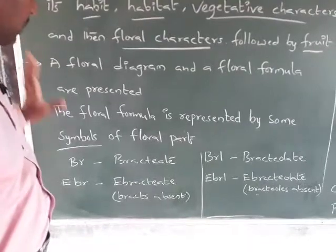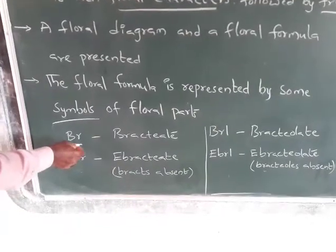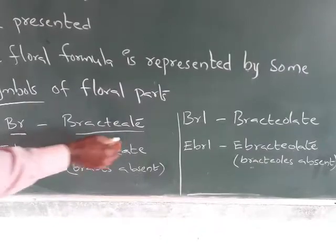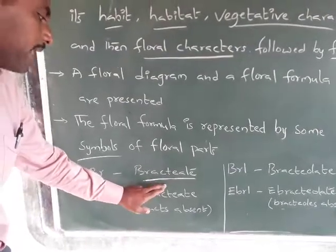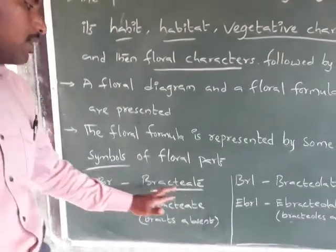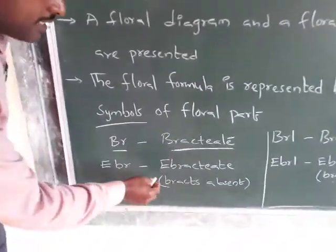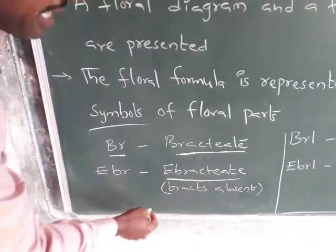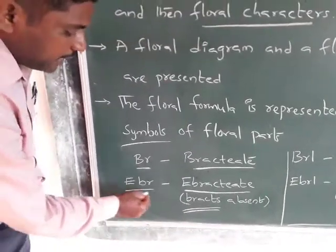The floral formula indicates some symbols which we have to discuss. Here, BR stands for bracteate, which means the flower has a bracteate — that flower is called a bracteate flower, indicated by BR. If the flower does not have the bracteate, that flower is called ebracteate, indicated by Ebr.